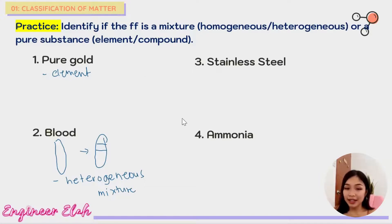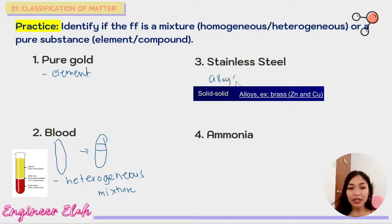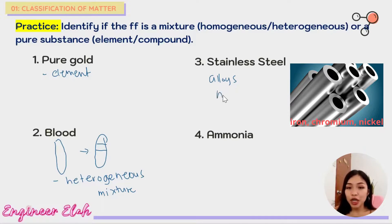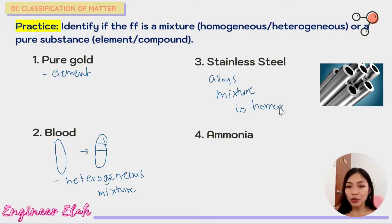Number three: stainless steel. Take note that mixtures are not always liquids — they can also be solids. Stainless steel is actually an alloy, meaning metals that are blended together. It is composed of iron, chromium, and nickel. This makes it a mixture. And when you look at it, you cannot visually distinguish which part is iron, chromium, or nickel — it appears uniform all throughout. So this is considered a homogeneous mixture.